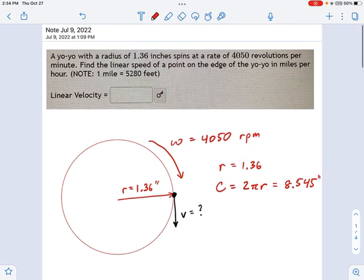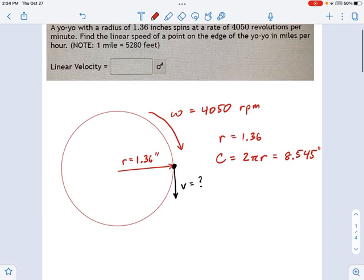That's how far around the circle is. And we're going to complete one loop around the circle, actually 4,050 loops around the circle, in a minute. So the speed is going to simply be V equals 8.545 inches. Let's put this into units. That's how many inches I make per revolution. And I'm going to do 4,050 revolutions per minute.